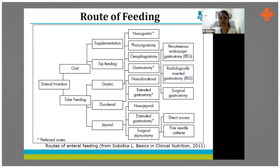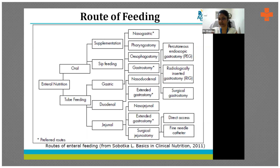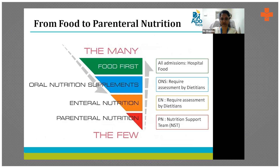For tube feeding access, you can go for nasogastric, pharyngoscopy, esophagostomy, gastrostomy, or nasoduodenal routes — there are many different levels. Next comes the PEG or PEJ: percutaneous endoscopic gastrostomy or jejunostomy. It can also be a surgical patient wherein a feeding jejunostomy is inserted during the surgical procedure itself. These are the different ways to feed a patient, but always we go with food first.